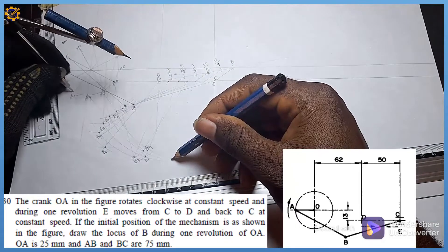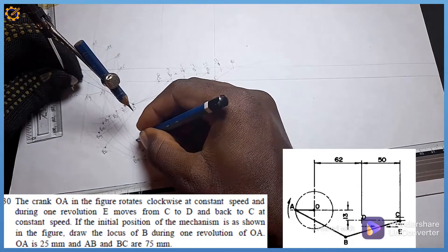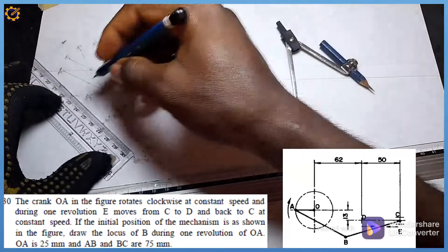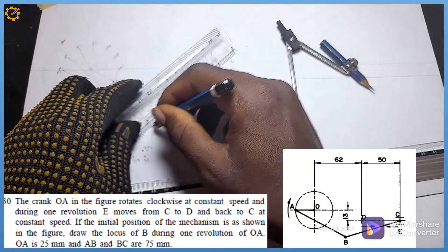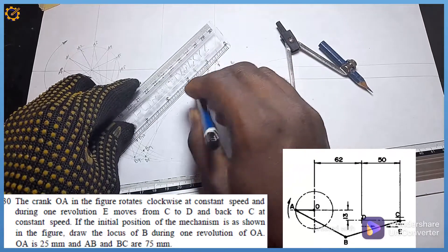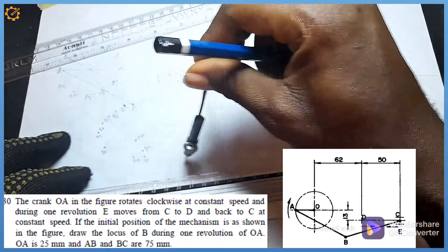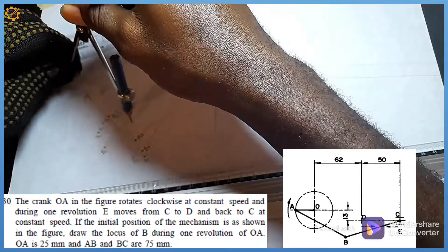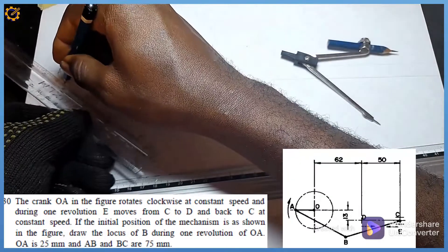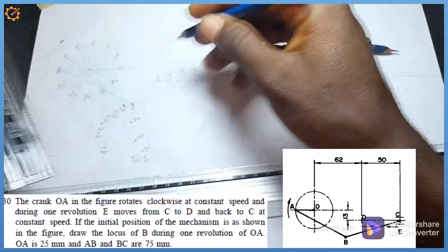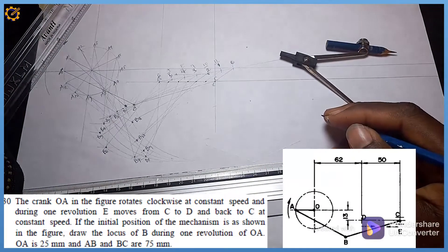For B11, using C1: I pick my compass and draw the arc — you can see it on screen. Then on A11 I draw the corresponding arc, and their intersection is B11. I join A11 to B11, then C11 to B11. All eleven B-positions are now plotted.